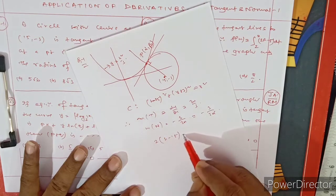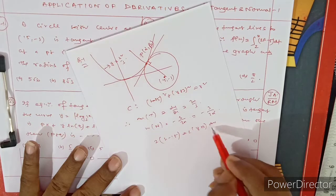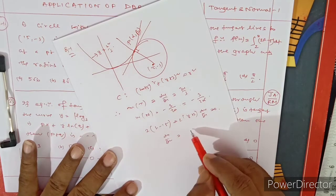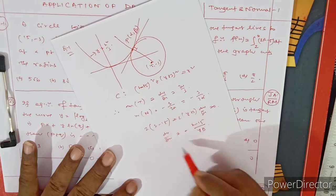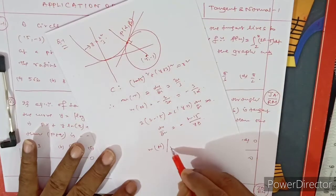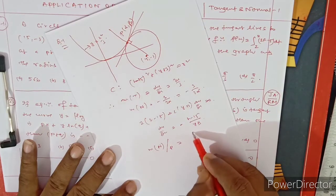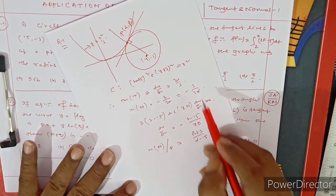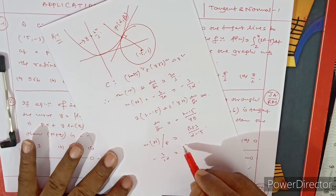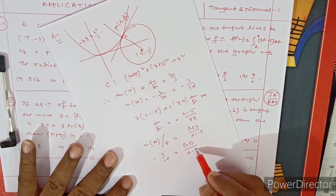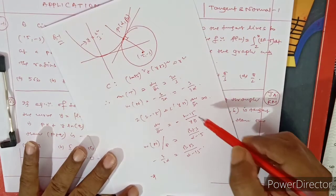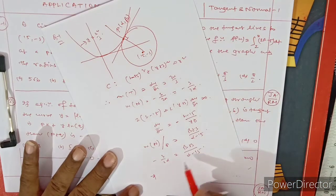From the circle equation (x−15)² + (y+3)² = r², differentiating gives: dy/dx = −(x−15)/(y+3). So slope of normal at point (α, β) = (β+3)/(α−15). Equating the two expressions for slope of normal: (β+3)/(α−15) = −3/(2α).